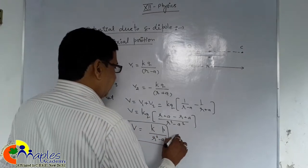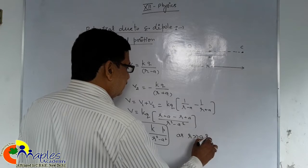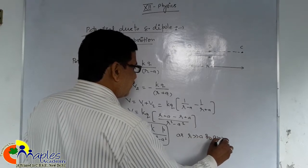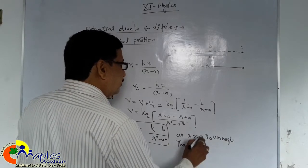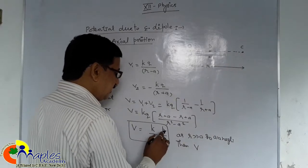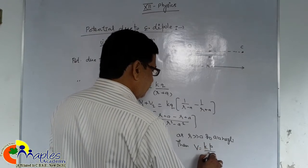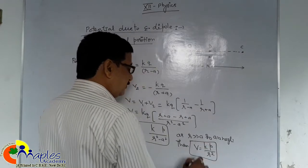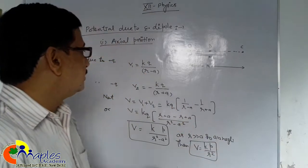As we know that R is very much greater than a. So a is approximately negligible. R plus a approximately equals R. Potential at C will be V equals KP upon R square, where K is 1 upon 4 pi epsilon naught. This is the potential.